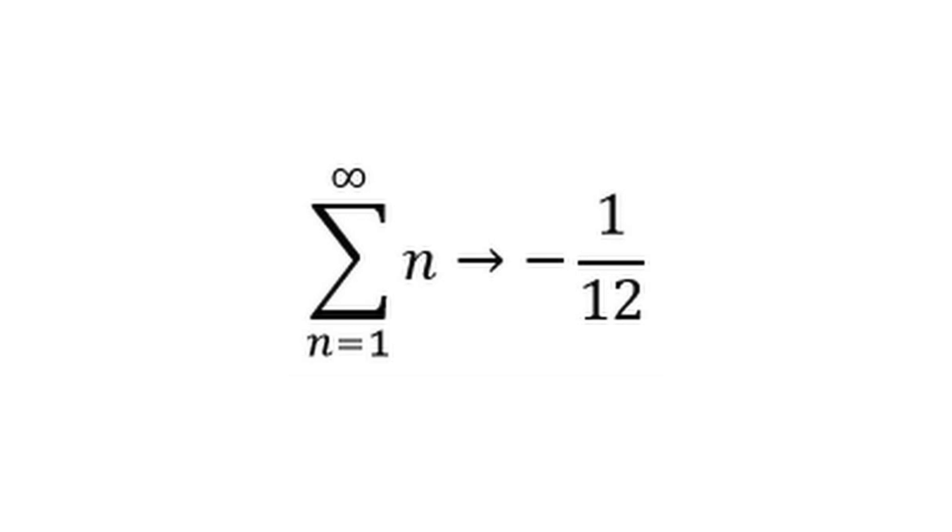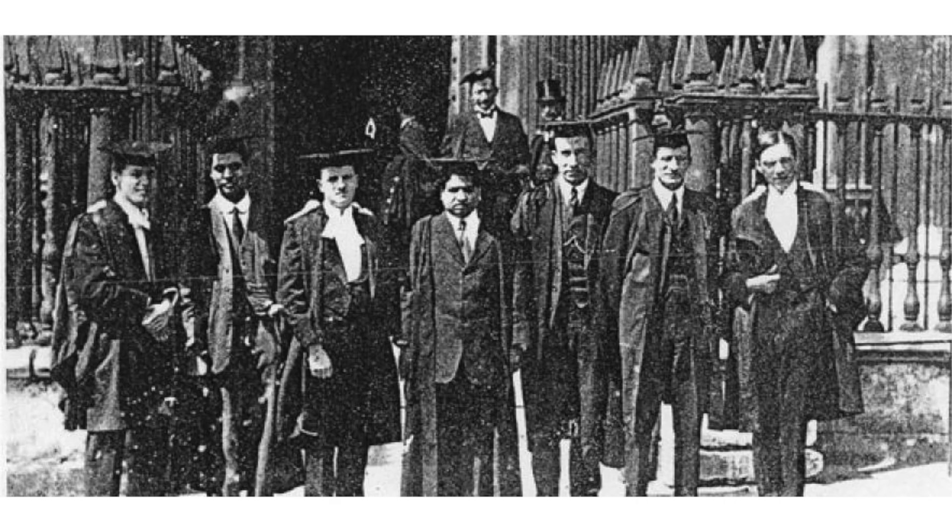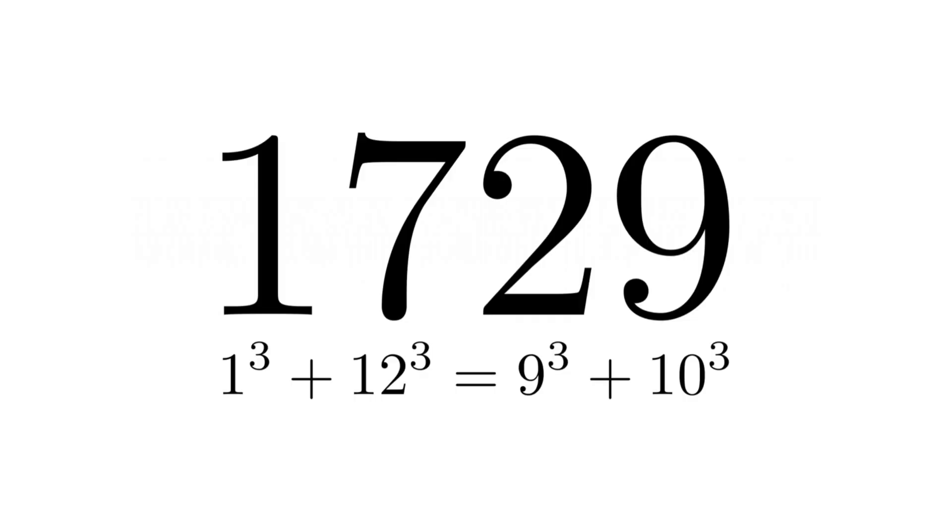Among the theorems sent was the idea that the sum of all positive natural numbers is equal to negative 1/12th. After receiving this research, Hardy requested that Ramanujan be admitted to Cambridge to conduct mathematical research amongst other mathematicians at the university.